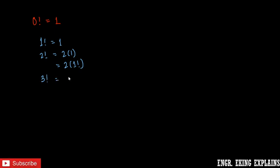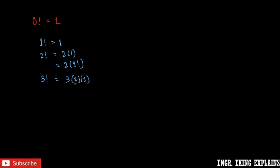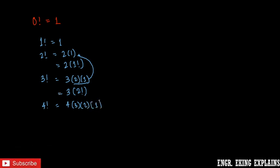If we have 3 factorial, that will be 3 times 2 times 1. And this part here is just equivalent to 2 factorial. So we could write 3 factorial as 3 times 2 factorial. For example, we have 4 factorial, so that will be 4 times 3 times 2 times 1. And this part here is just equal to 3 factorial, so we could write 4 factorial as 4 times 3 factorial.